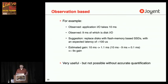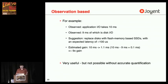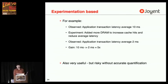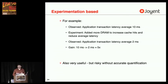This is what I wanted to start this talk about — thinking about the metrics, understanding that it's useful to pick the right ones before we go and reach for a visualization. For an experimentation-based example: application transaction latency averaged 10 milliseconds. As an experiment, we added more DRAM to increase cache hits and reduce average latency, and the application latency was now 2 milliseconds — a 5x gain. But it's still important that those numbers are accurate and apply. If these numbers are junk, I can't solve these problems.